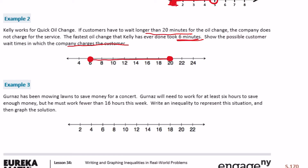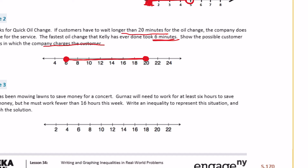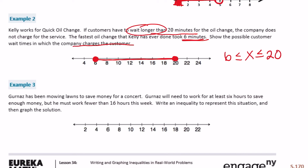You could wait anywhere between six minutes and 20 minutes. If it takes longer than 20 minutes, it's free. So when you pay, the wait time must be less than or equal to 20 minutes — I use 'or equal to' because it says 'wait longer than 20,' not '20 minutes or longer.' On the short end, the fastest is six minutes, so x is greater than or equal to six. Your wait time is anywhere between six and 20 minutes to be charged.